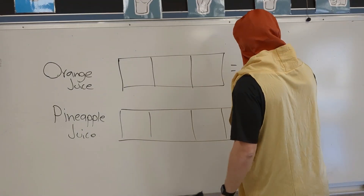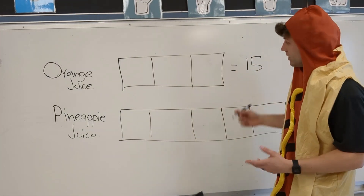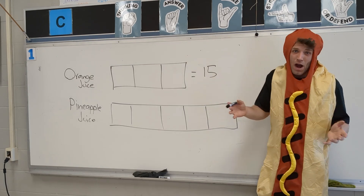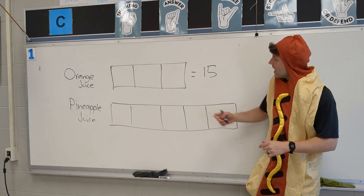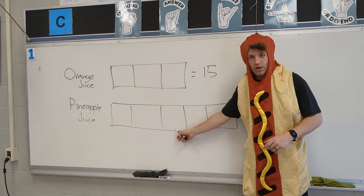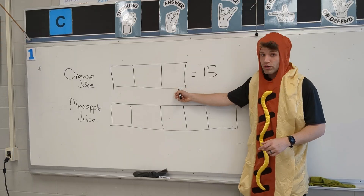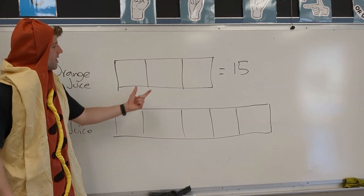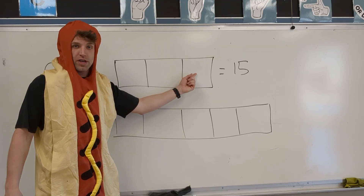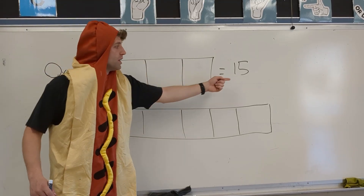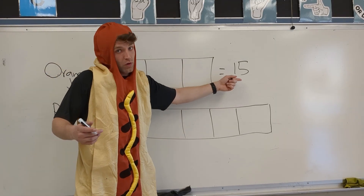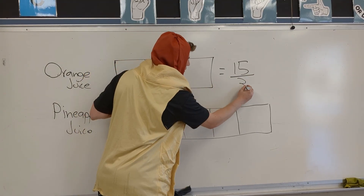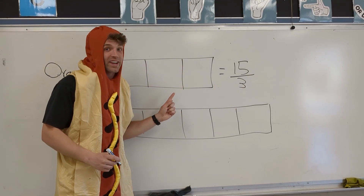Don't overthink it, people. Now, all we have to do is use division. Our tape diagrams help us visualize how we need to break down this problem. We have a 3 to 5 ratio, but we know we want to turn our orange juice into 15. So with this tape diagram, we have 3 boxes for our orange juice, and I want to turn that into 15. Take your 15 of orange juice and divide it, or split it, into 3 — because that's how many boxes I have.